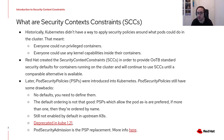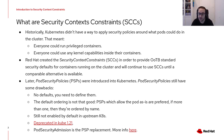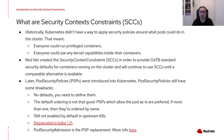SCCs are still an OpenShift thing since they were not merged into Kubernetes upstream — unlike role-based access control, for instance, which started being OpenShift-specific and now is part of Kubernetes out of the box. By default, when you install an OpenShift cluster, it comes with eight SCCs that are thought to cover most use cases.